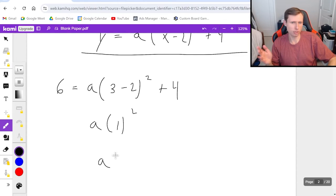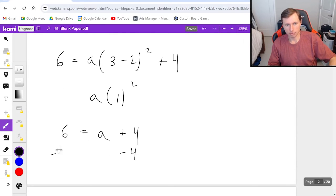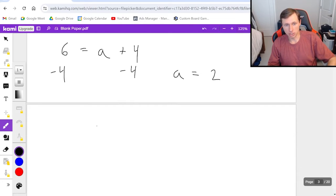So this is just 1a or you can just write a. So that means 6 equals a plus 4. Subtract 4 from both sides. Really easy math here. A is going to be 2, which means my final answer is y equals 2 times x minus 2 squared plus 4.